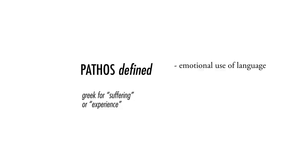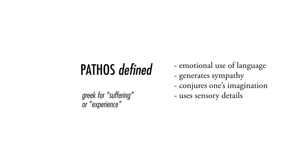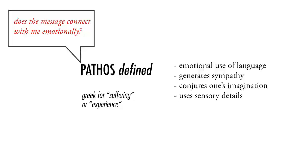Pathos is Greek for suffering or experience — it's persuading by appealing to our emotions. This is done through several ways: the use of strong, clever, vivid, or emotional language; generating a sense of sympathy with the subject; conjuring one's imagination; and using sensory details, like showing detailed or rich visuals, describing smells, or using sound to create a sense of place. A good question to ask yourself with pathos is: does the message connect with me emotionally?